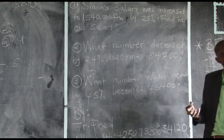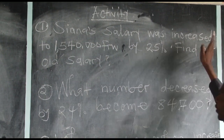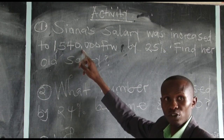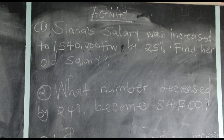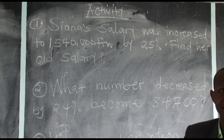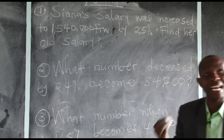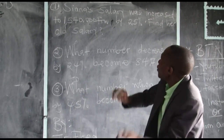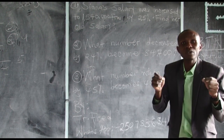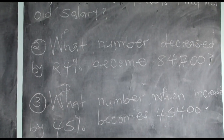Activity number one: Siana's salary was increased to 1,540,000 francs by 25%. What does it mean? They have already given you the increment, but you don't know the number they increased before. They want you to find the original salary — how much was she earning before the 25% increase?